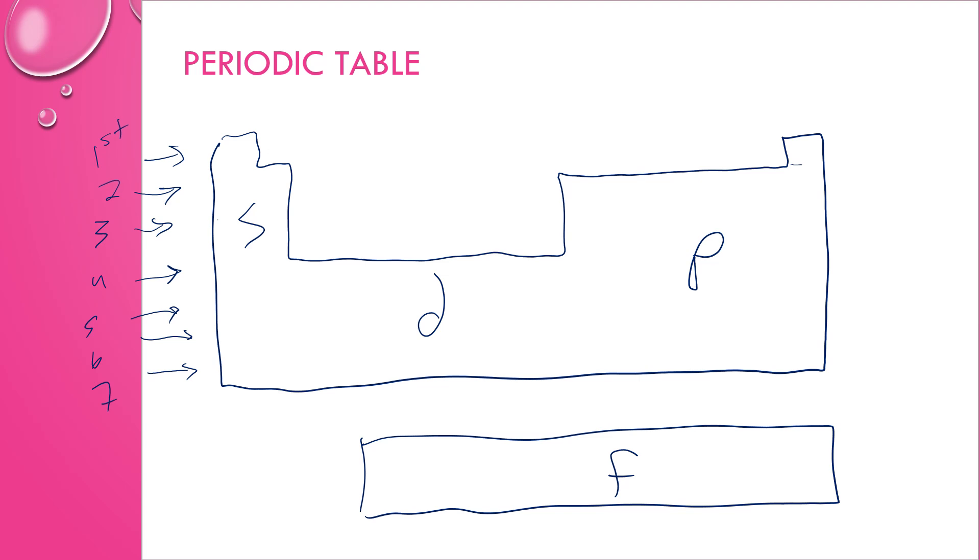You should also be able to locate the metals, metalloids, and nonmetals. Typically we use a staircase here. It's not 100% perfect, because bonding is kind of a continuum. Metallic character versus nonmetallic character, kind of in between. But typically the elements around the staircase are more metalloids. Things to the left are more metals, and things to the right are nonmetals, for the most part.